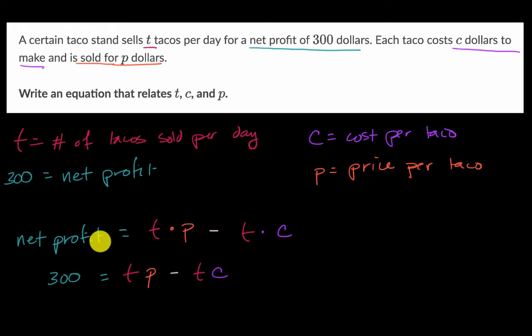Now it's completely possible that they didn't give us net profit as $300 per day. And instead they said that is one of the variables and they gave one of the other variables. And that would have been okay. We could have used the same logic. Whatever they didn't give us, we could have set up as a variable and whatever they did give us, maybe they gave us the price per taco. We could have put that as a given number.